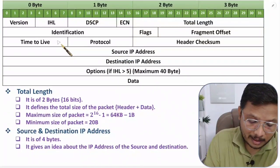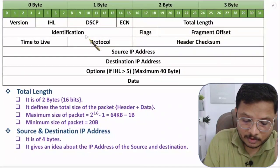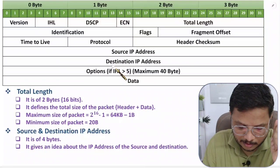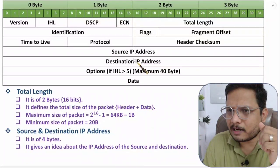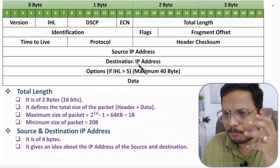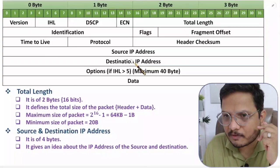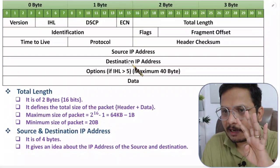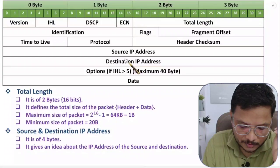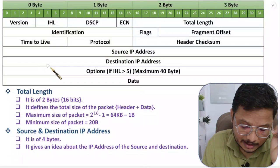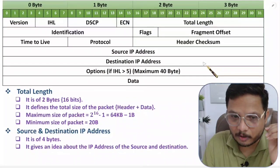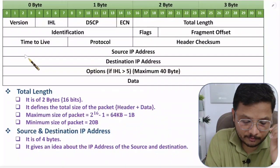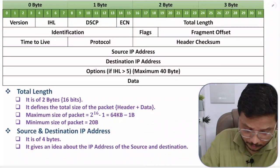Skipping identification, flag, and fragment offset for now — I'll explain those at the end. For Source IP and Destination IP: since we're using IPv4, each is 4 bytes (32 bits). These source and destination IP addresses are loaded in the header of the frame format.